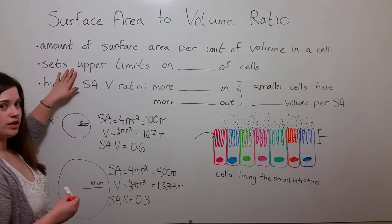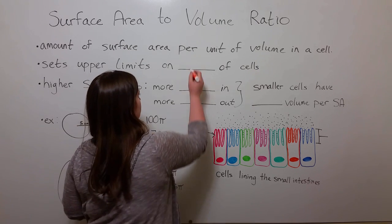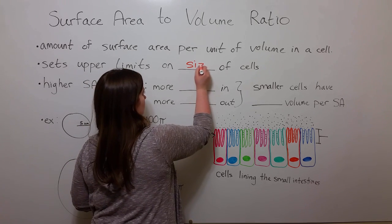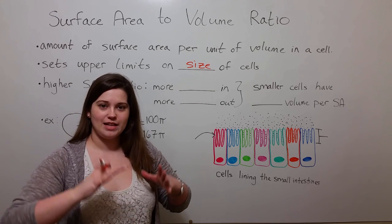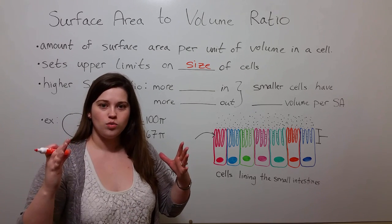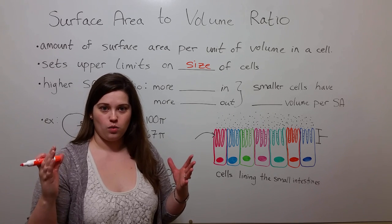What this means is that a cell, if it gets too large, won't have enough surface area to meet its metabolic requirements.